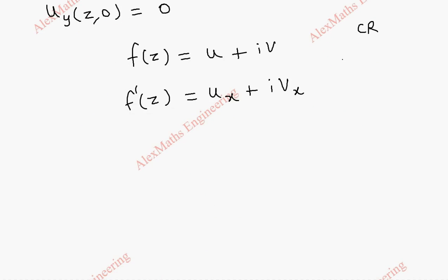Now from CR equations we have u_x equal to v_y. And u_y equal to minus v_x. So this v_x can be changed as minus u_y from the CR equation. So f dash of z will be u_x minus i u_y.